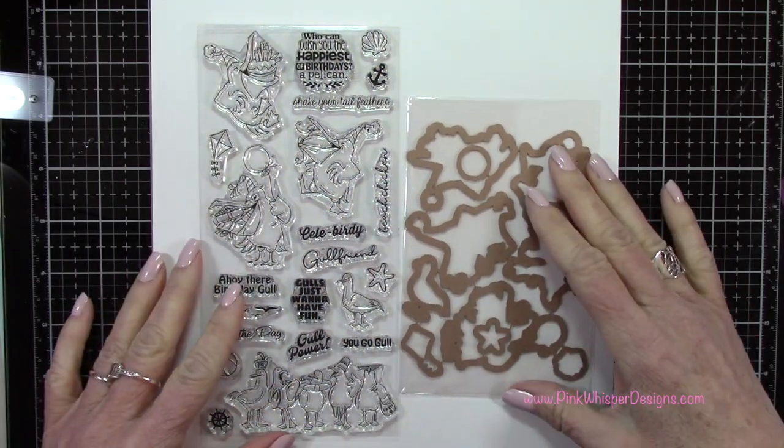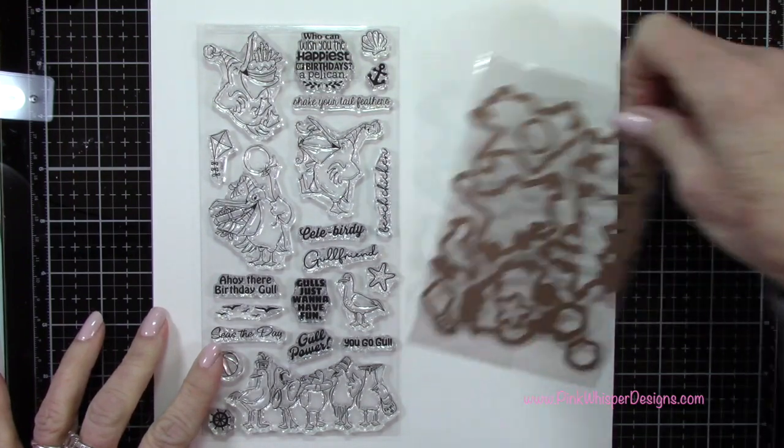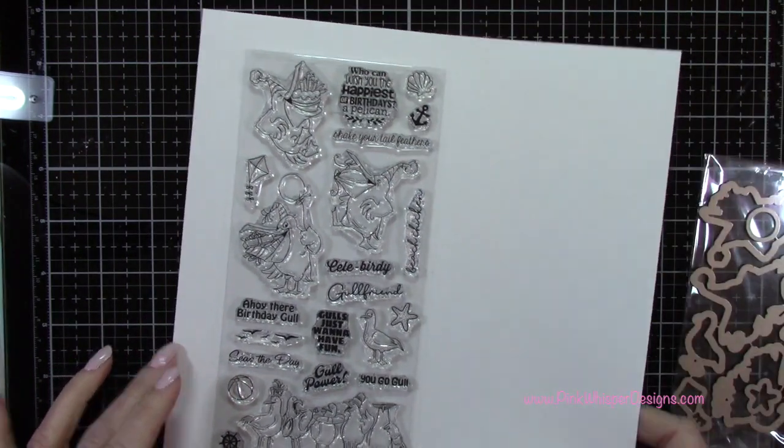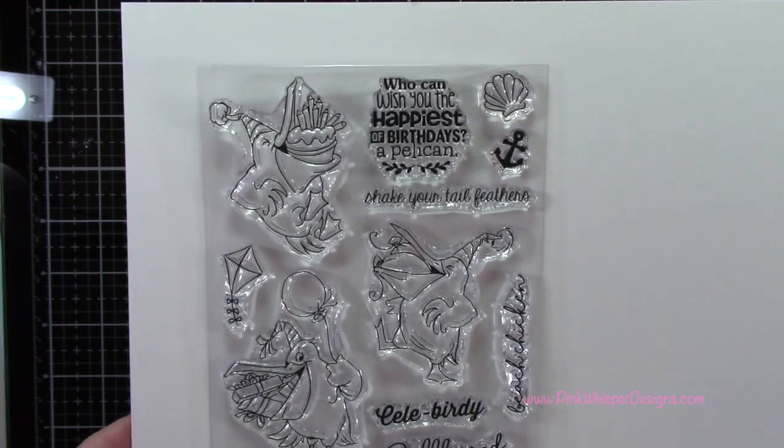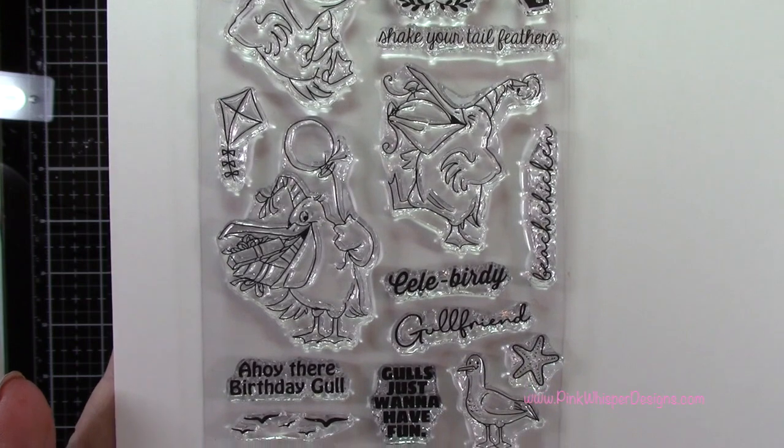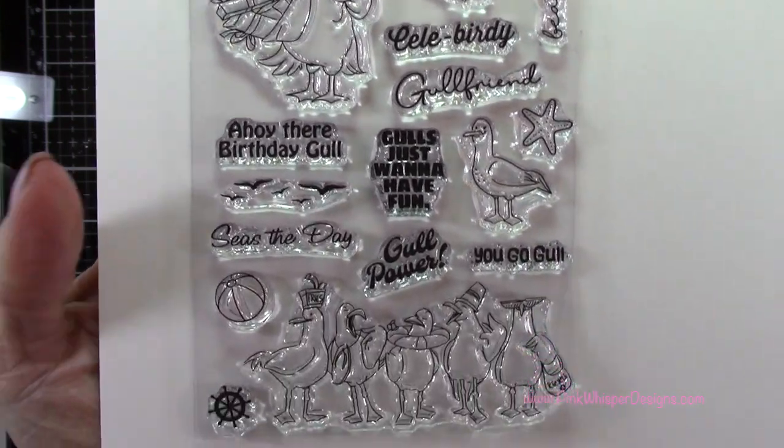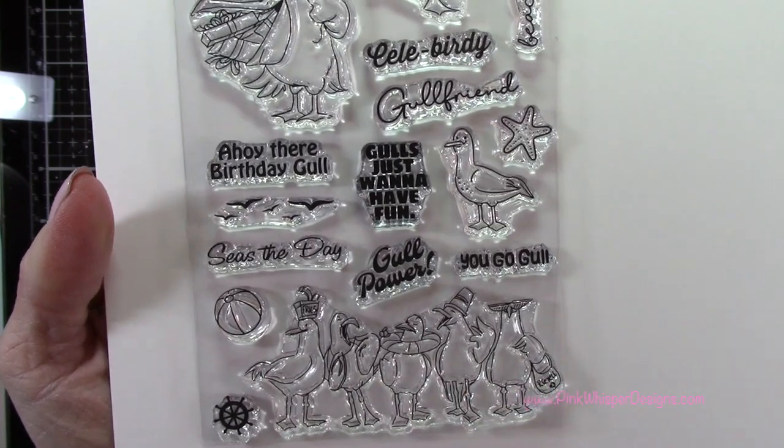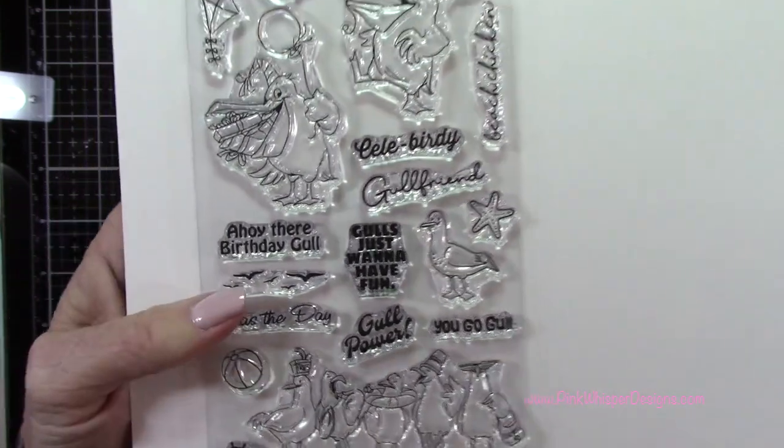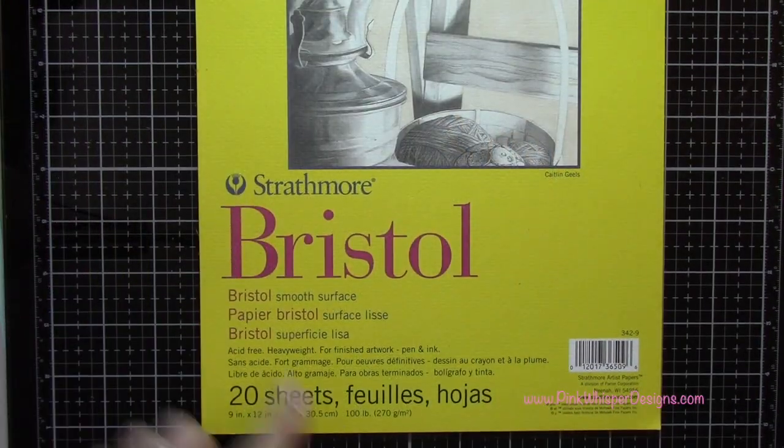This is the brand new Gull Friends set from Art Impressions and you get the coordinating dies with this as well, so that'll make it really easy to cut out all these little images. You can see these cute little pelicans with the gifts and balloons, some seashells, some extra seagulls. We're going to be using that little grouping of seagulls down at the bottom and some of these other images which I'll show you as we go along.